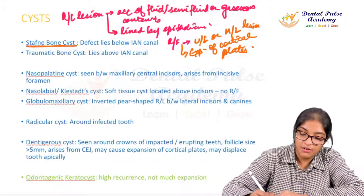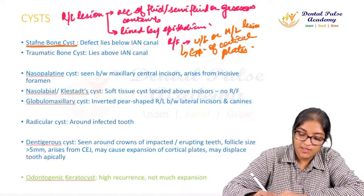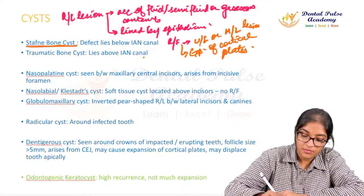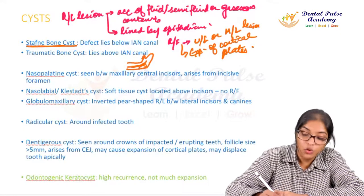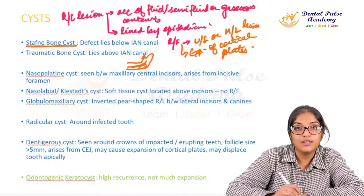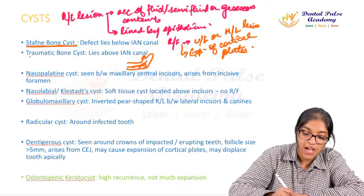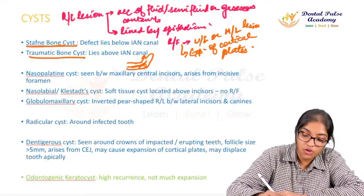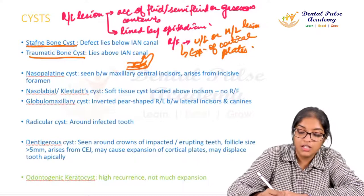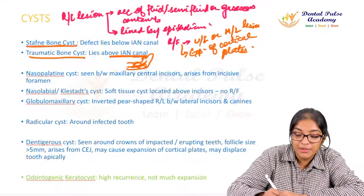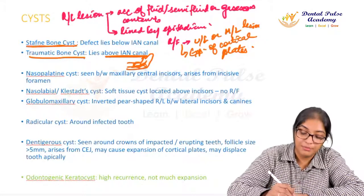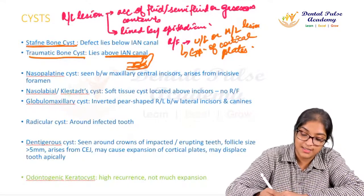For Stafne bone defect: if you see a unilocular radiolucent lesion below the inferior alveolar nerve canal, it points toward a Stafne bone defect. However, a radiolucent lesion above the inferior alveolar canal and below the roots of a tooth may be a traumatic bone cyst.